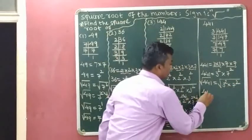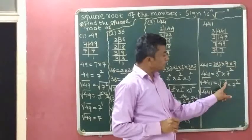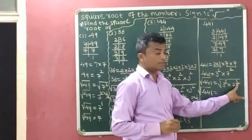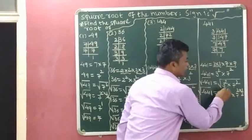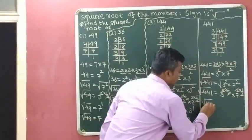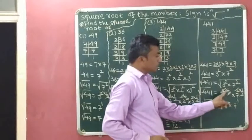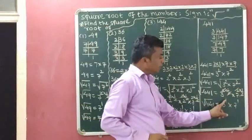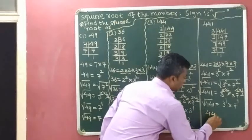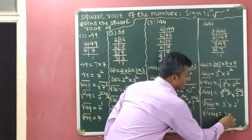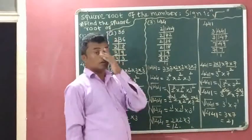Square root means half, so we multiply 1 half with the exponent 2 in 3 squared and with the exponent 2 in 7 squared. The 2s cancel, leaving 3 to the power of 1 times 7 to the power of 1. So the square root of 441 equals 3 × 7 = 21. Therefore, the square root of 441 is 21.